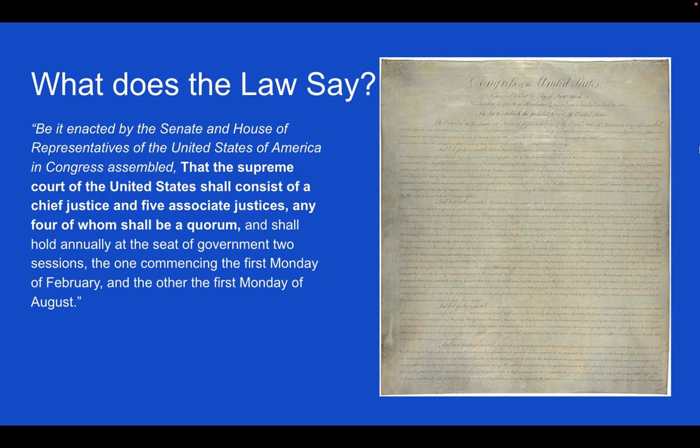Here's what it says: essentially, the Supreme Court shall consist of a chief justice and five associate justices. And if there are four of them present, they can conduct court business. An interesting part about why it is five justices is because there were five federal circuit courts at the time. So you'd have one chief justice and then one justice for each circuit court.